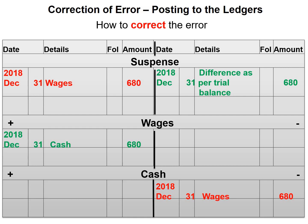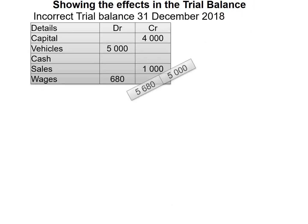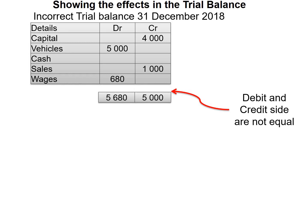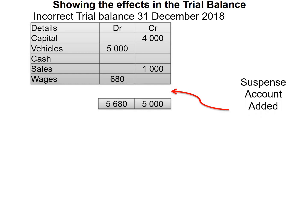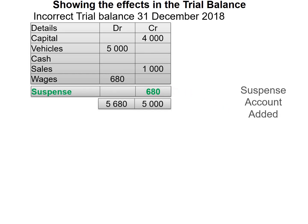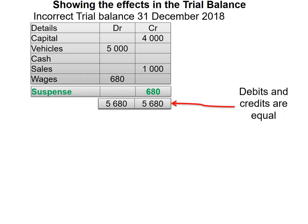Let's have a look at how this will affect our trial balance. Our incorrect trial balance will show that there is a difference of 680 on the credit side. What we did was open a suspense account because the debit and credit side of our trial balance were not equal. We add our suspense account with a credit balance, and that should make our trial balance balance. As you can see, our debit and credit sides are equal.